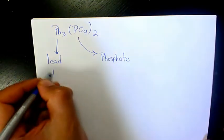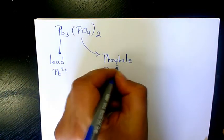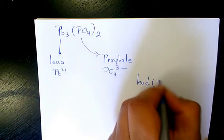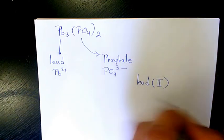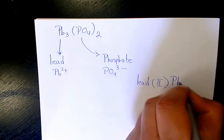So we have Pb²⁺ and PO₄³⁻. That's going to be lead, in this case that's two, because lead has different oxidation states. So lead(II) phosphate.